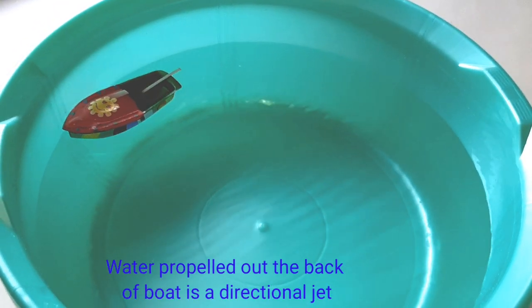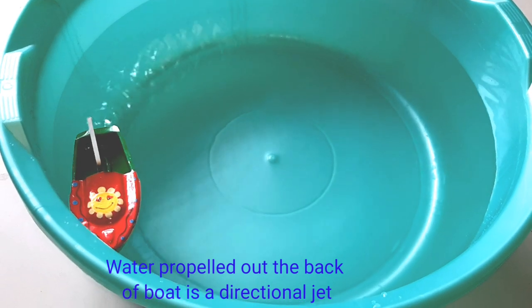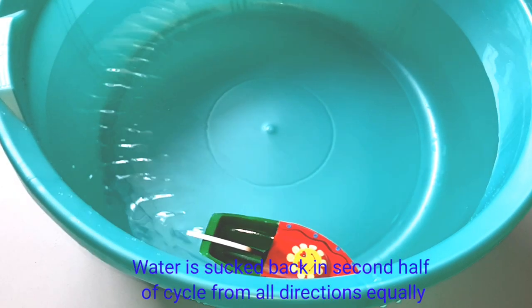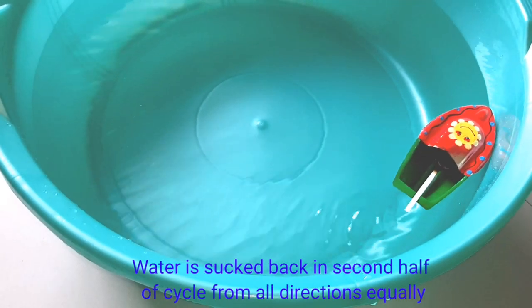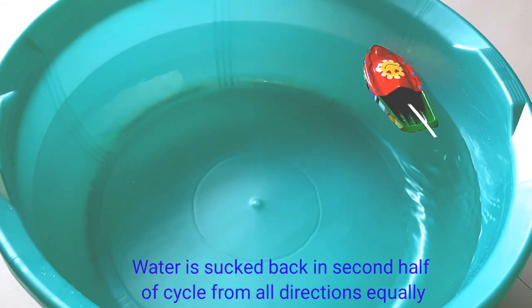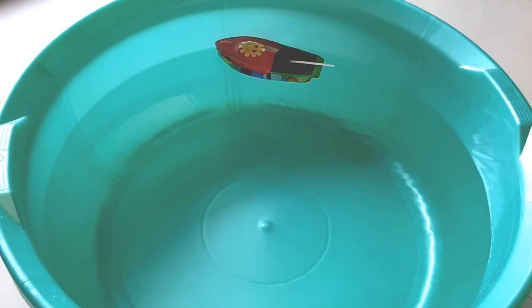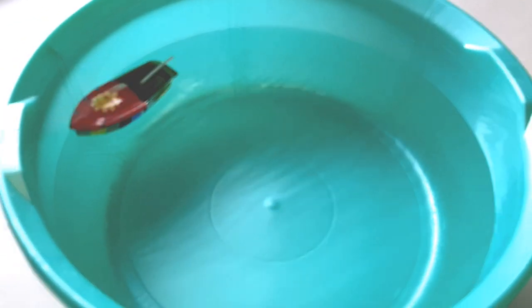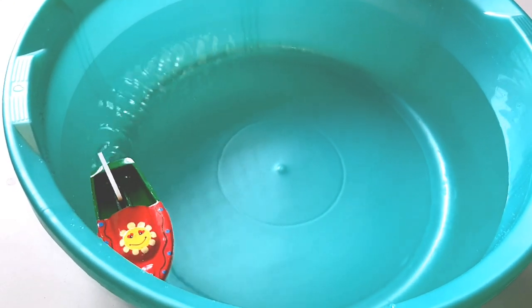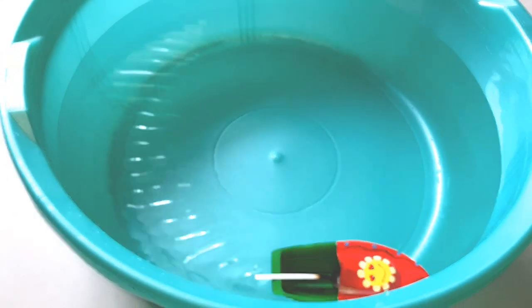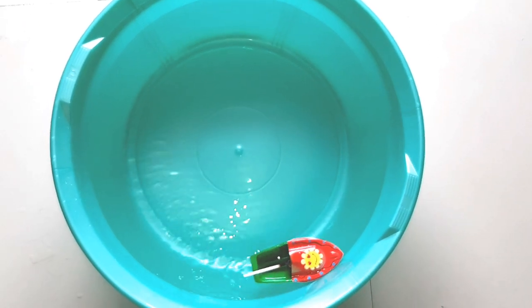The key principle is that the water being propelled out of the back of the boat is a directional jet, but the water being sucked back in on the second half of the cycle is not directional. Instead, it is drawn in roughly hemispherically—that is, from all directions equally. This asymmetry is what propels the boat forward.